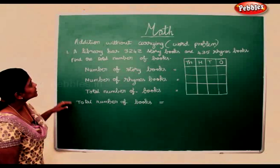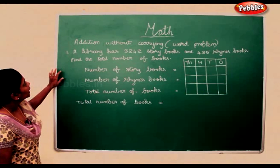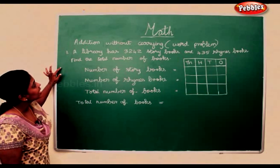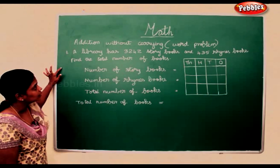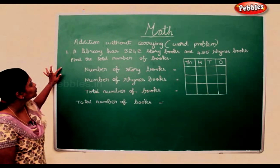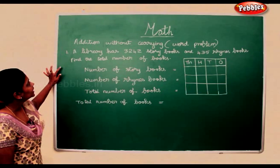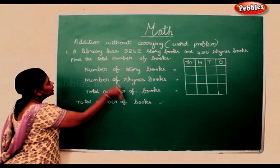Now we shall see some word problems. A library has 3,242 story books and 435 rhyme books. Find the total number of books.